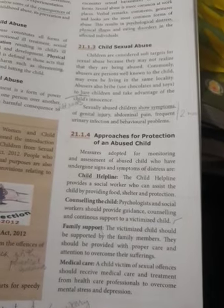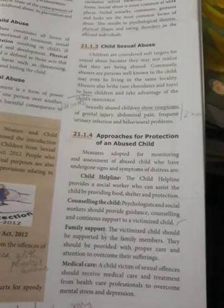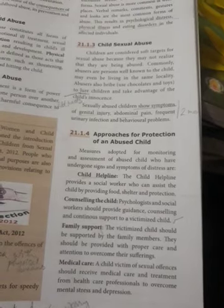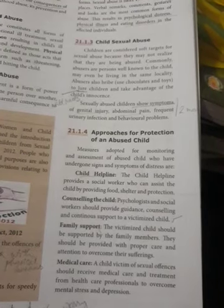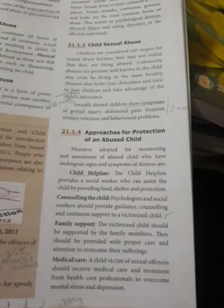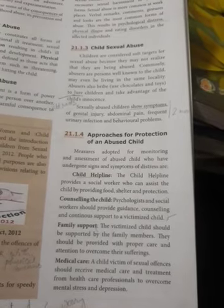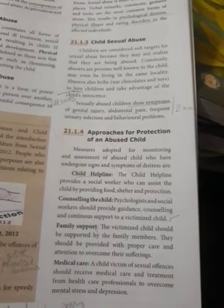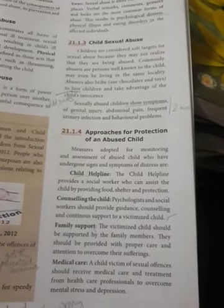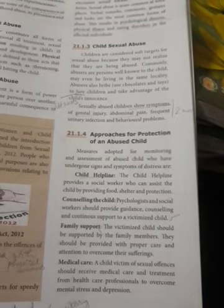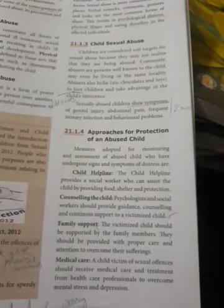The first is called the child helpline. The child helpline helps the abused child by providing social workers, and these social workers assist the abused child by providing food, shelter, and protection.